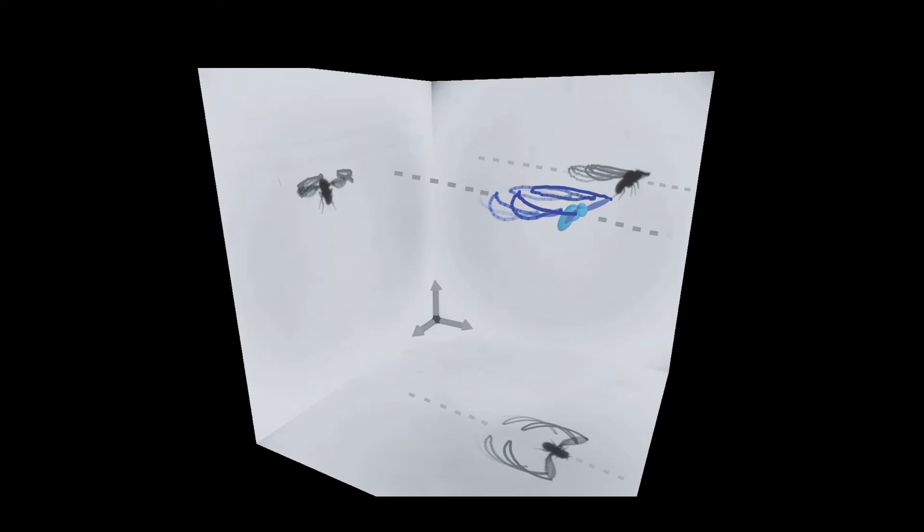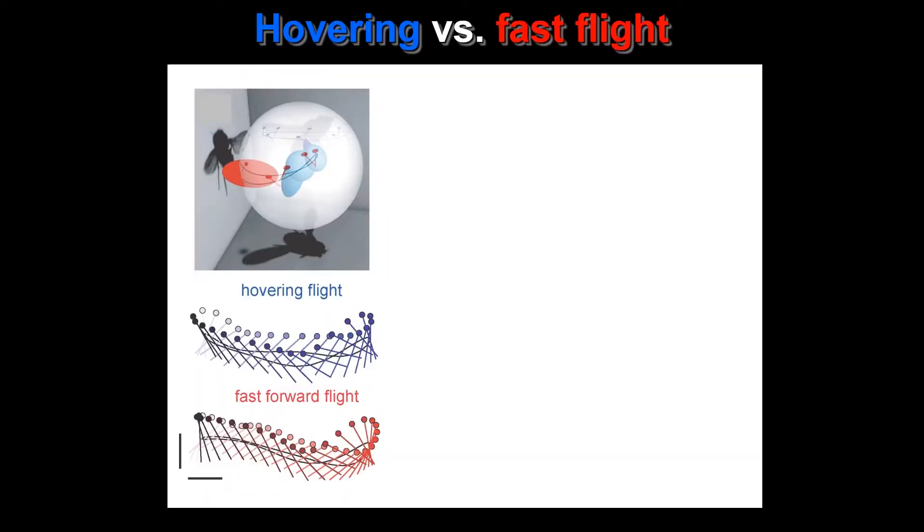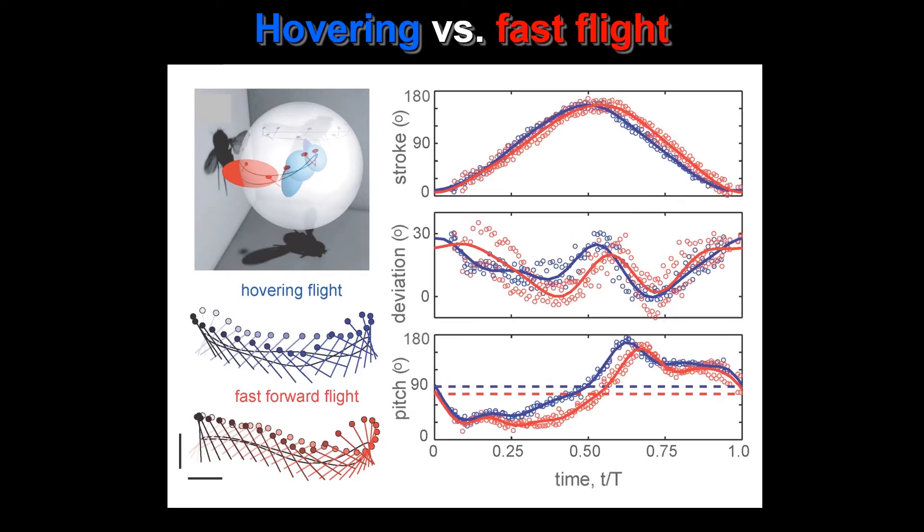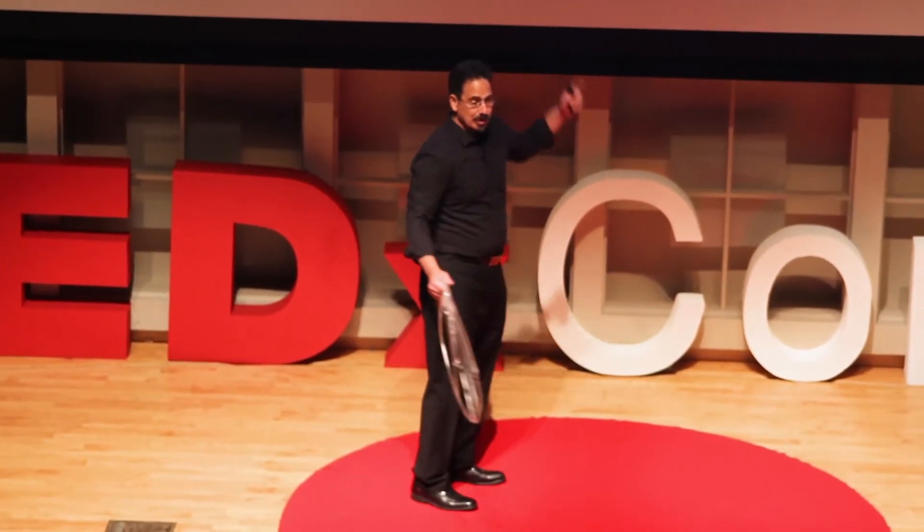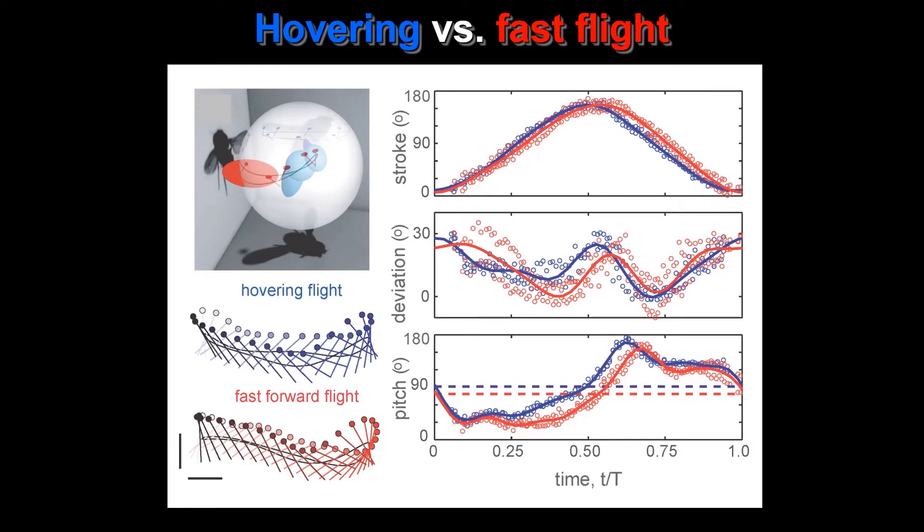Well, if you take a look at a fly that's hovering versus a fly that's moving fast, both of those wing strokes look pretty much the same. They have this figure eight wing shape. When you start to look at the very details of these wing strokes, you see that there are slight differences, but they're kind of subtle. The top curve shows you the stroke of the fly. It goes from zero to 180 as the wing moves back and forth. The middle curve has the deviation angle of the wing, and it goes up in the front and up in the back.